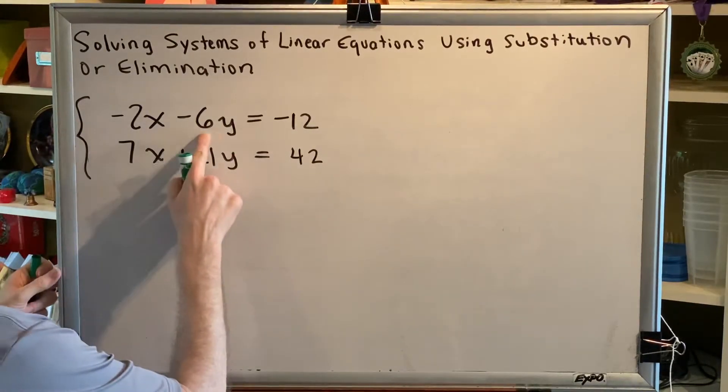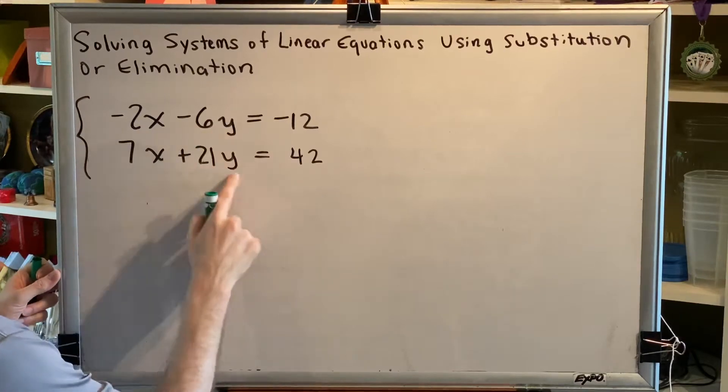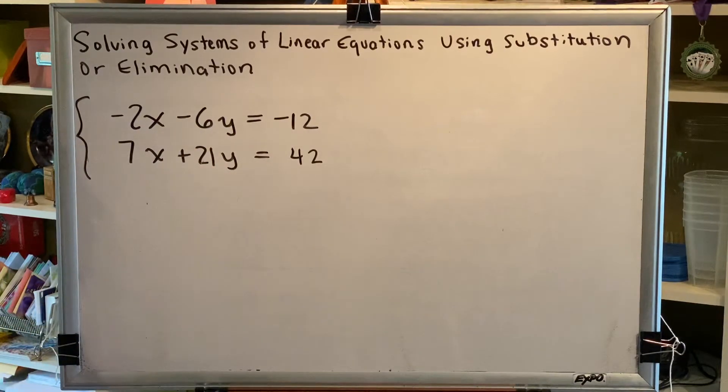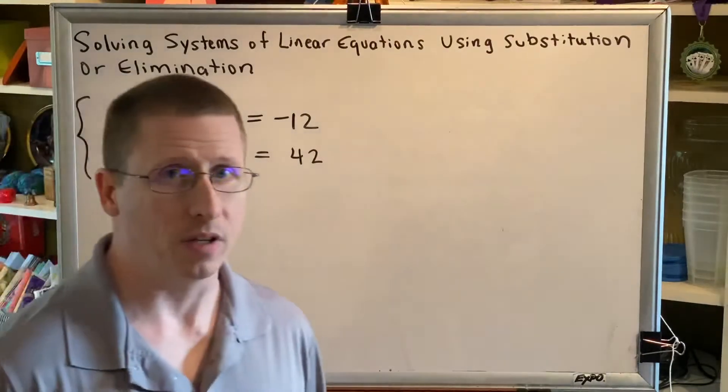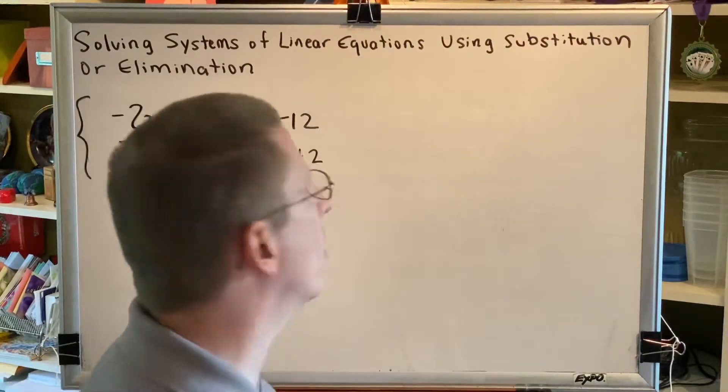Notice that in the top equation, the y term is negative 6y, and in the bottom, the y term is positive 21y. These are not opposites. How do we make them into opposites?